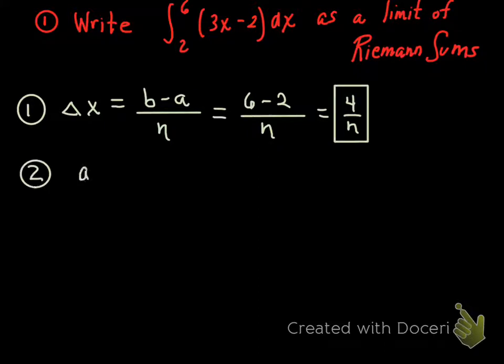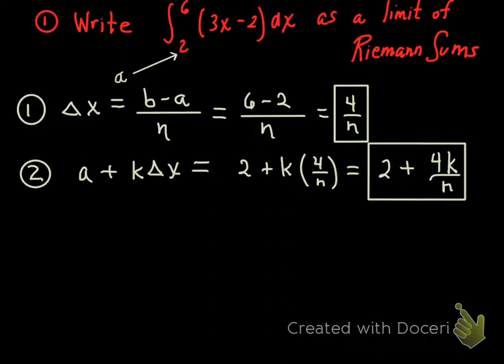Step 2. I'm going to find a plus k delta x. a is stolen right from here. So I'm going to be 2 plus k, then steal what you found in step 1, 4 over n. This usually is multiplied out, so you get 2 plus 4k over n. Not so bad. I realize you're not sure what this means, but hopefully you can follow these steps. Step 3.